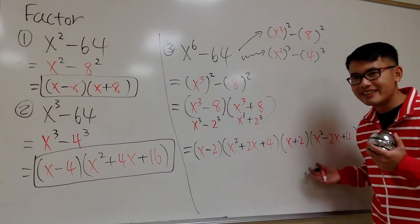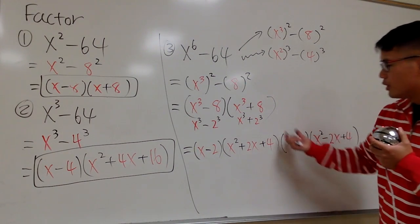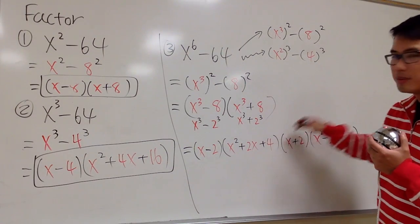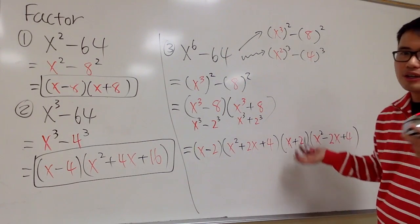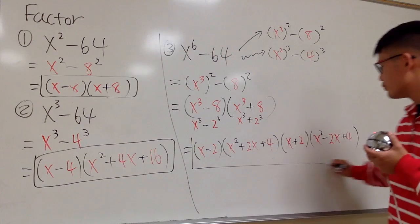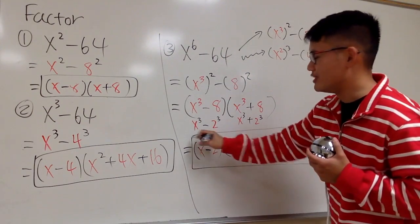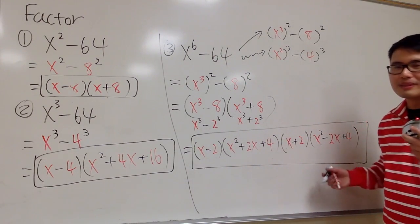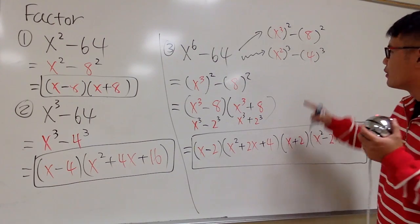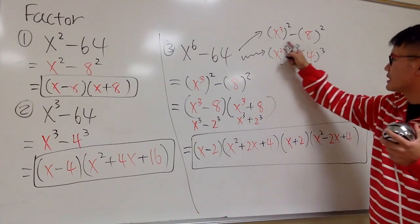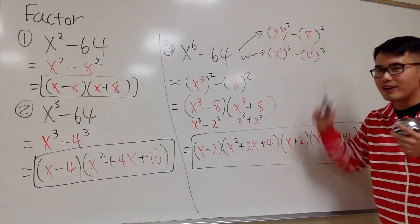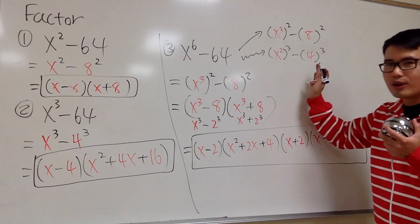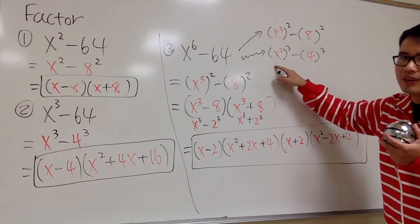This right here is the answer. If you want to rearrange them — put the two-term factors first and the three-term factors later — that's okay, it's up to you. We can present this as the answer as well. If you guys comment down below, I will show you how to factor from the other approach, and there's also an interesting thing to talk about if you want to do it that way.